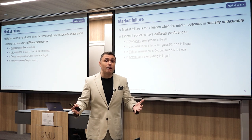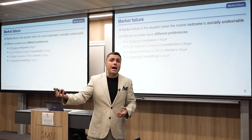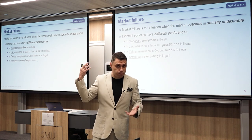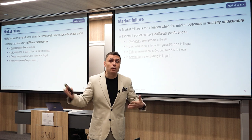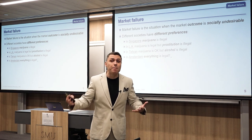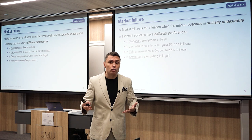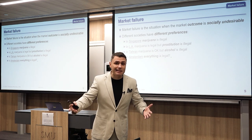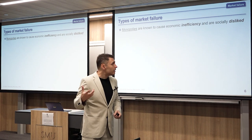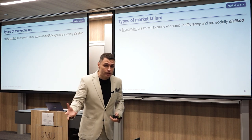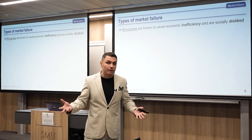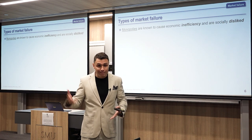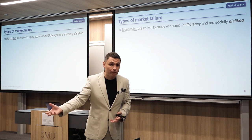Societies do have preferences. If the market gives you an equilibrium solution that is disliked by society, then we have market failure. There are many types of market failure. First, monopolies are known to produce inefficiencies — and inefficiency, by definition, is a failure. Nobody likes an inefficient market outcome except the monopoly making tons of money.